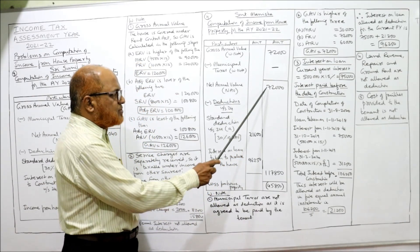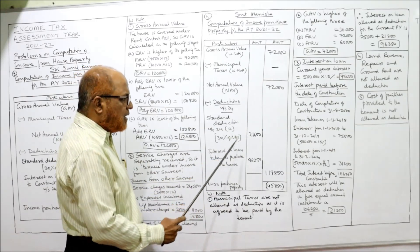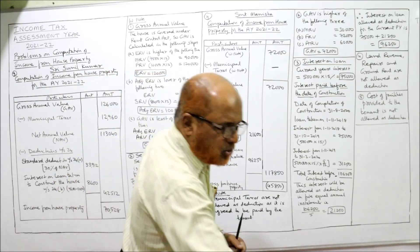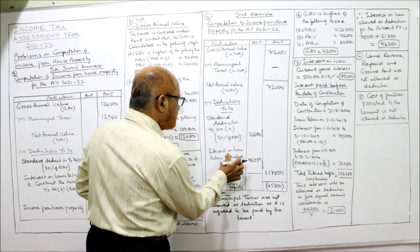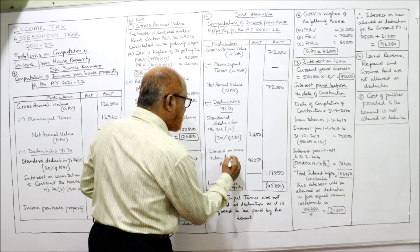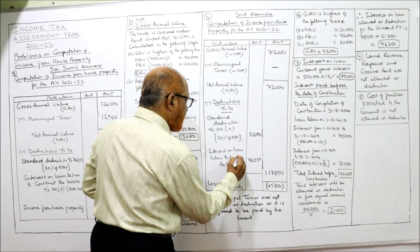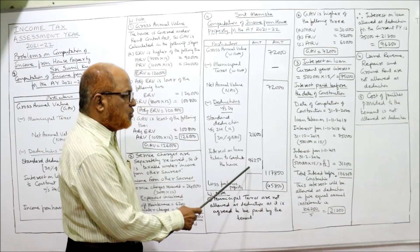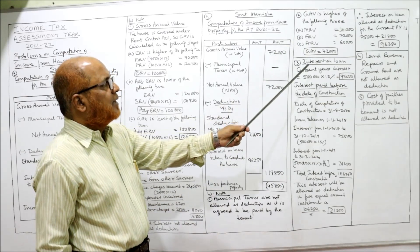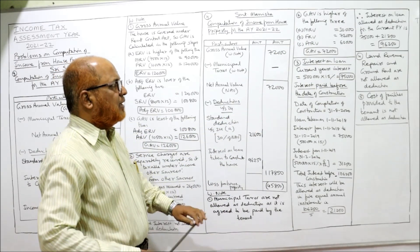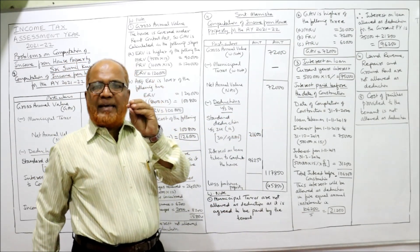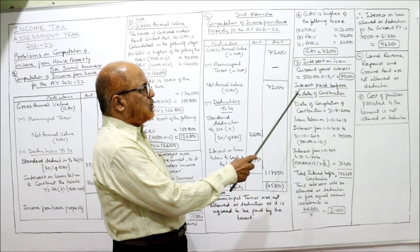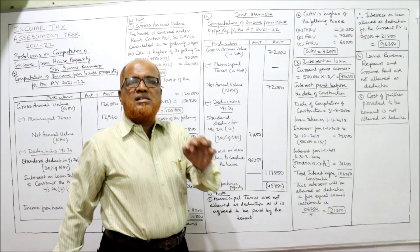Now, interest on loan taken to construct the house: ₹96,250. Here's how we get that. Loan amount: ₹5 lakh, rate of interest: 15%. So ₹5 lakh × 15% = ₹75,000 is one year's interest — that is the current previous year's interest of ₹75,000.